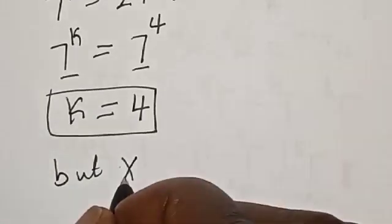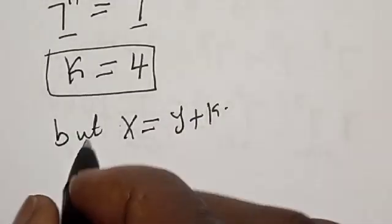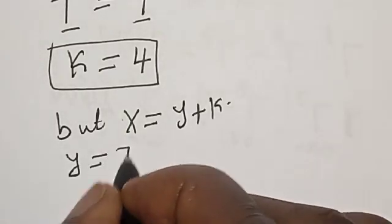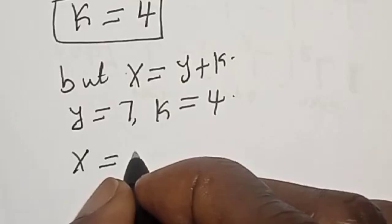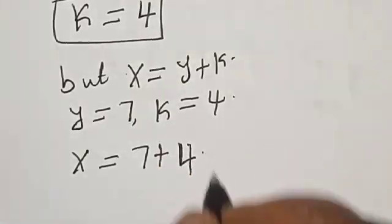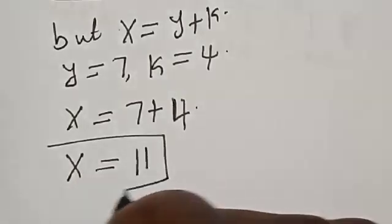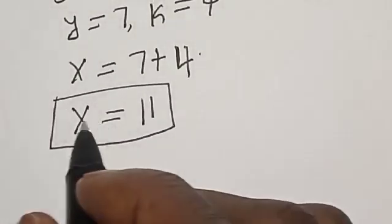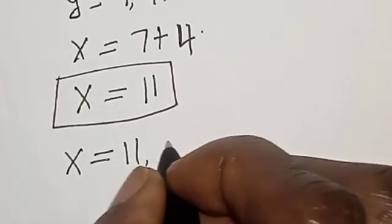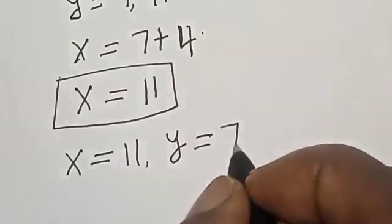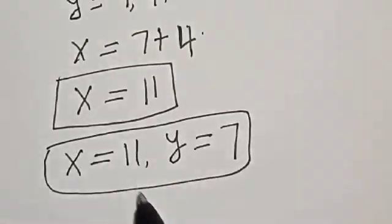Since x equals y plus k, and y equals 7 and k equals 4, x equals 7 plus 4, so x equals 11. That is our final answer. Therefore, x equals 11 and y equals 7. If you love the class, like, share, comment and subscribe. Thank you, bye bye!